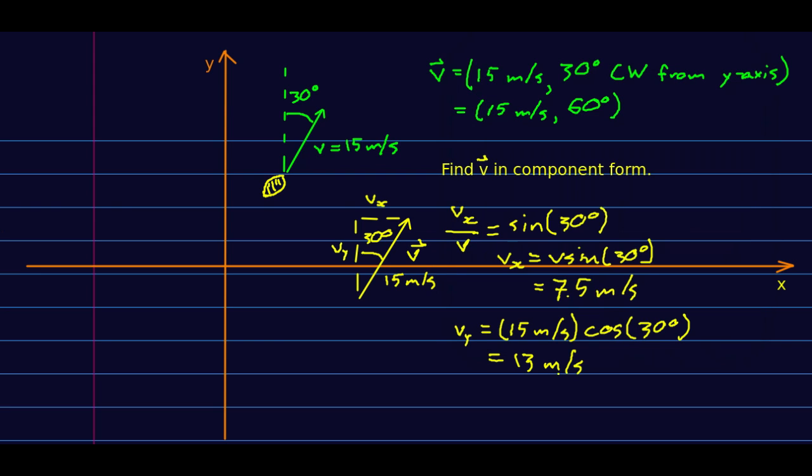So to go from magnitude direction to component form just draw the triangle and do the trig.